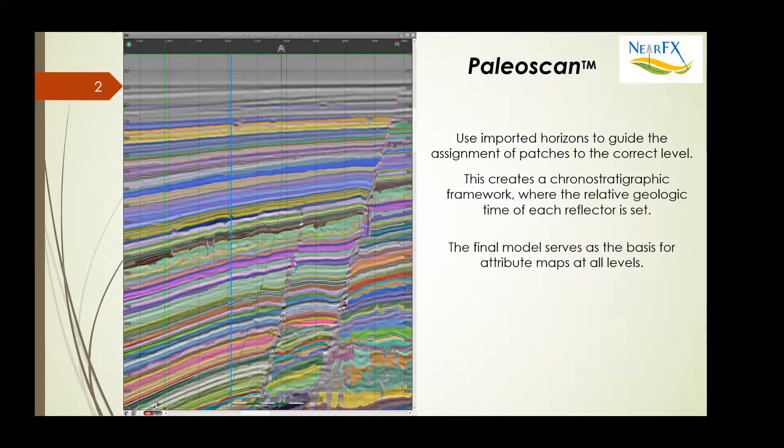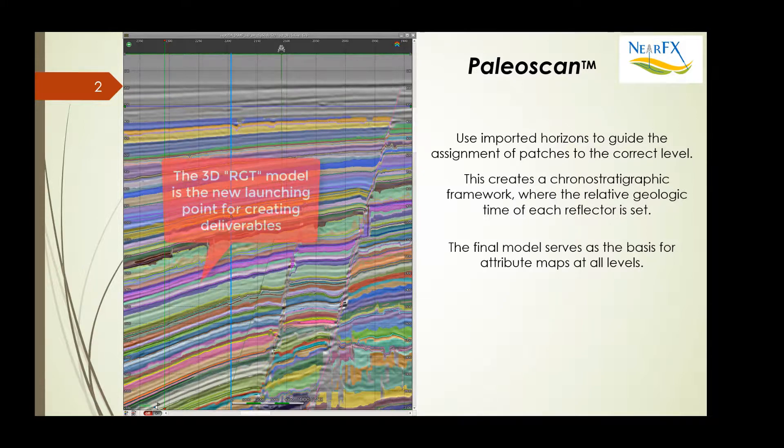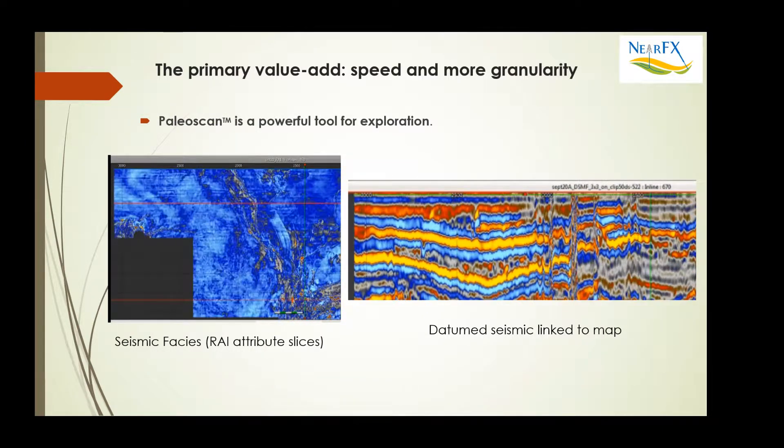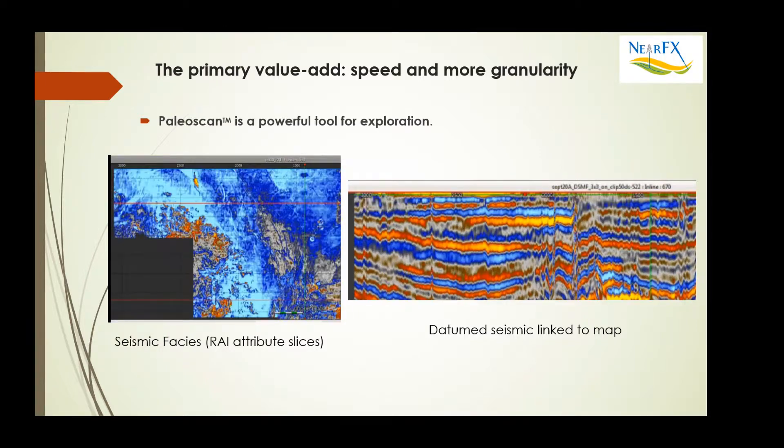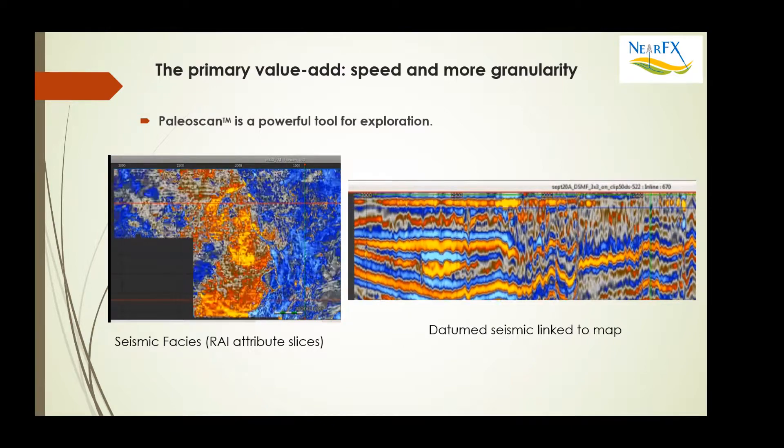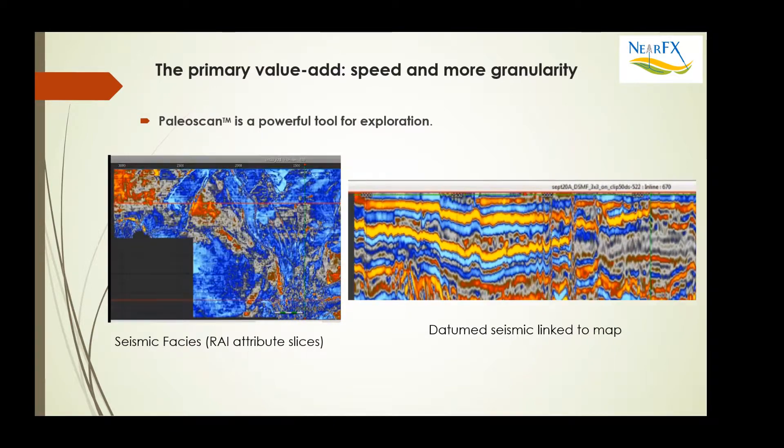The final model, shown here offshore Louisiana, serves as a basis for attribute maps at all levels. This is a change in the interpretation workflow and it's a powerful change because it provides more speed and much more granularity. It's a force multiplier for exploration companies.